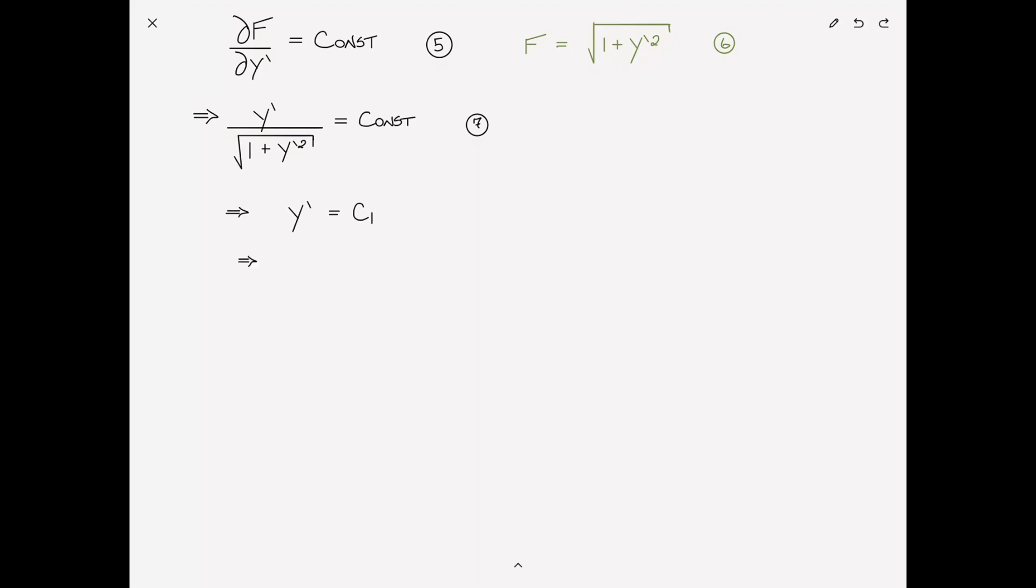and lo and behold, y equals c1x plus c2, which is the equation for a straight line. Let's put a box around that, and we're done.